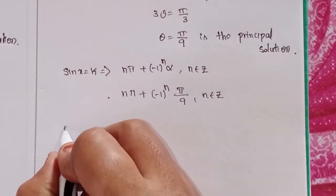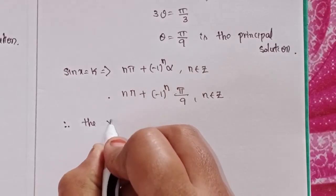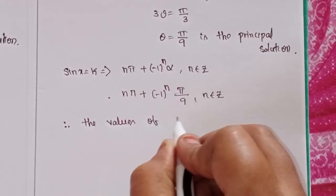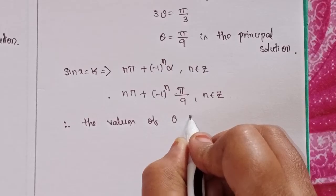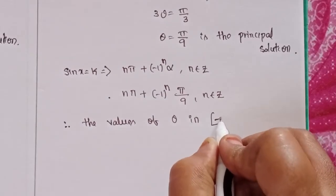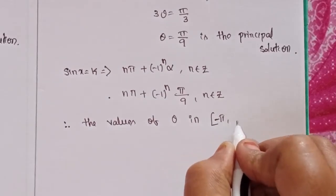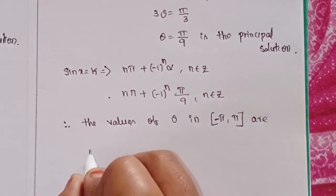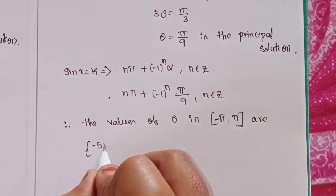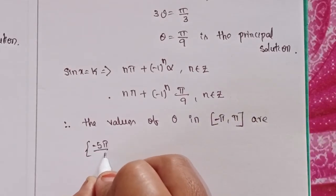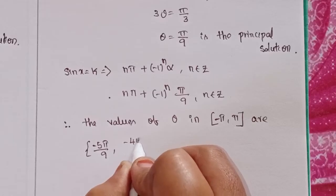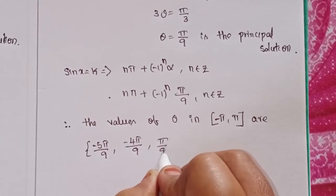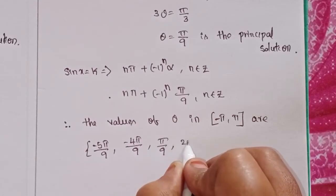Therefore, the values of θ in -π to +π are: -5π/9, -4π/9, π/9, 2π/9, 7π/9, and 8π/9.